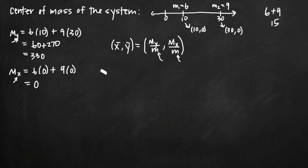So in order to find the center of mass, all we need to do is divide our moments by the total mass, which is 15, so we have here m sub y, which we know is 330, and we'll divide that by the total mass, 15. That'll be the x coordinate of our center of mass.